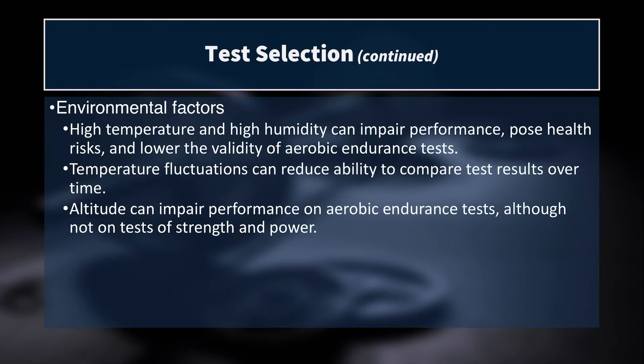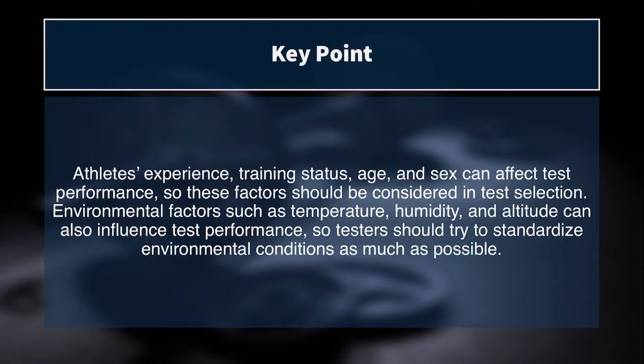Environmental factors also play a big role, especially for athlete health. High temperature and high humidity can not only impair performance but also pose a health risk and lower the validity of aerobic endurance tests. We also want to think about temperature fluctuations — for instance, if your pretest is a timed mile run at 7am when it's cool, and your post-test is at 3pm with 90% humidity, those two results won't be valid comparisons. The athlete's experience, training status, age, and sex can all affect test performance, and environmental factors such as temperature, humidity, and altitude must be standardized as much as possible.